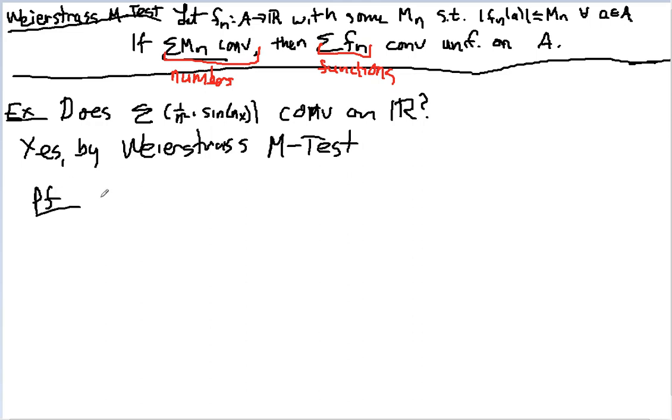f sub n of x is equal to 1 over n squared sine of nx. Oh, but remember, sine is always less than or equal to 1. So this is less than or equal to 1 over n squared, which I can set equal to my M sub n.